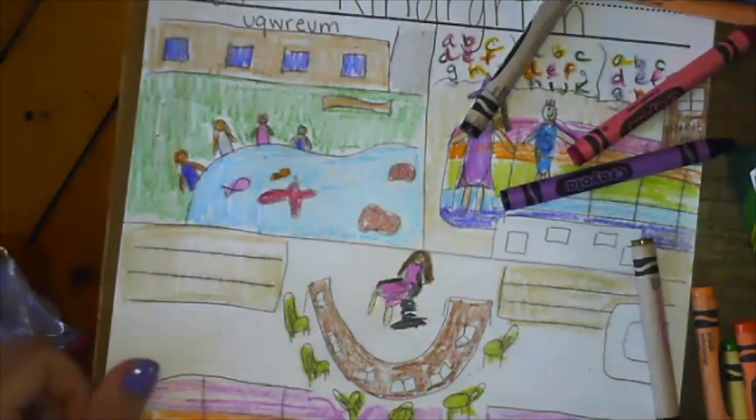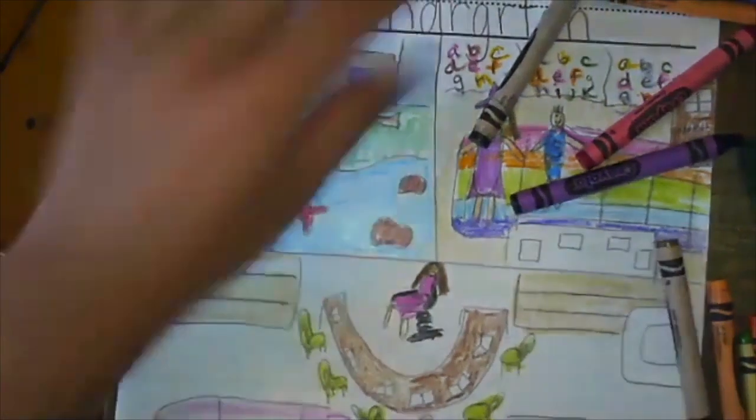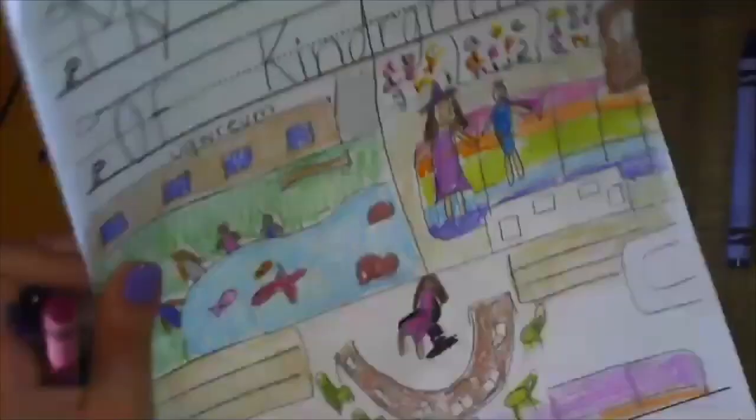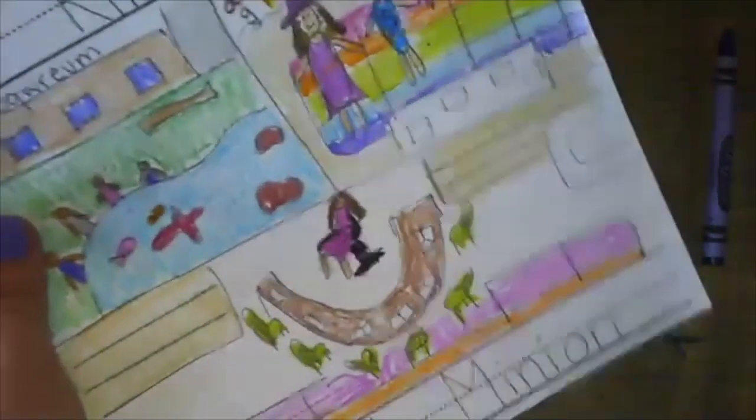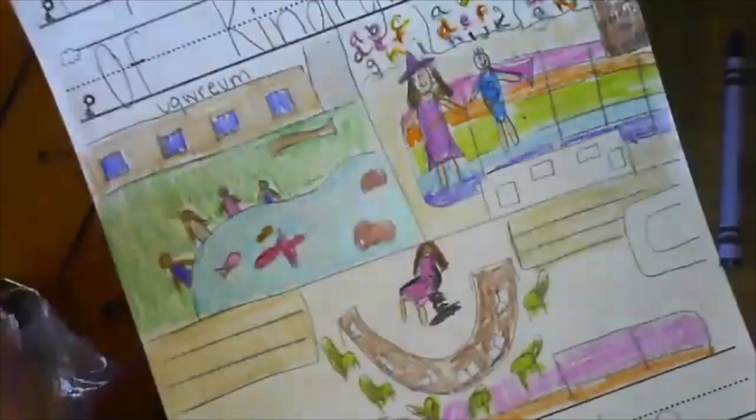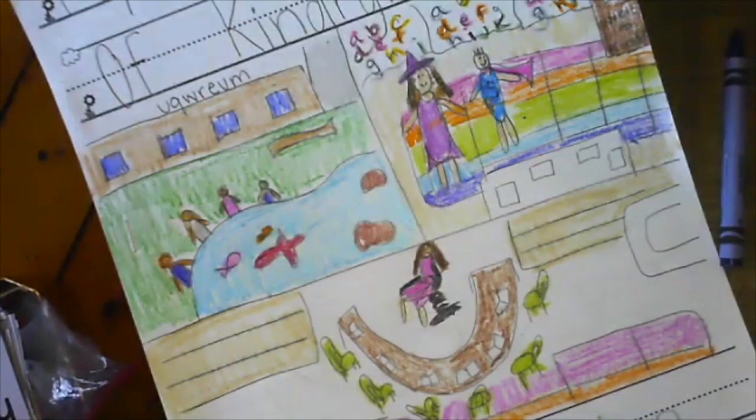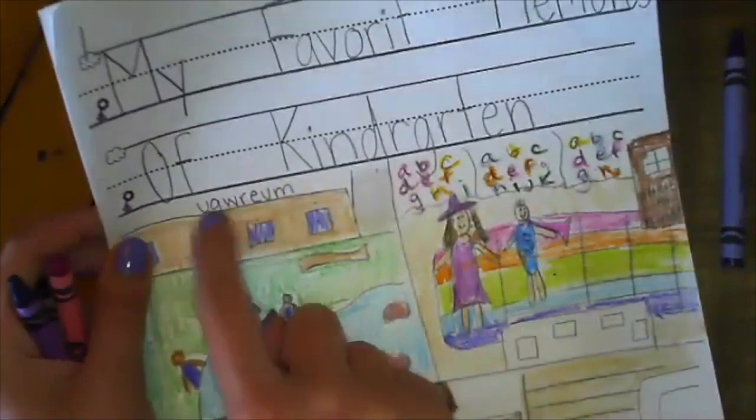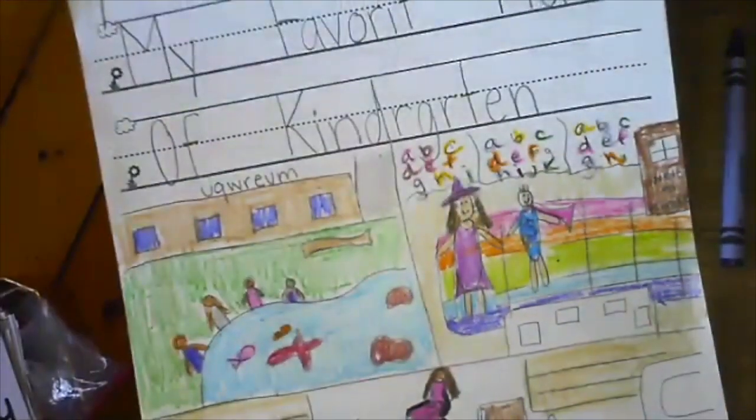Alright, for homework today I want you to make a cover for your kindergarten memories book. Write about your favorite things in kindergarten. You can split your cover into more than one picture like I did. Make sure you use real life colors, lots of details, and even add some labels. Notice I wrote aquarium. You can try something like that.